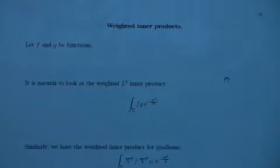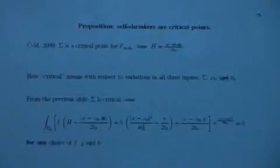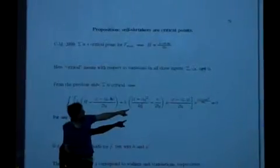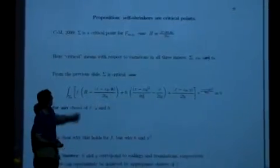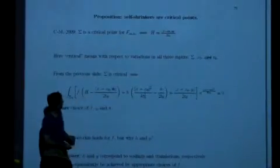Then we'll return to using the second variation to understand the stable critical points. The integrals that show up in this functional all have a Gaussian weight. I can think of each of the three terms as being a weighted inner product in this weighted L² space with the Gaussian weight. We consider an L² inner product with the weighted Gaussian in the integral, and there's a corresponding one you can do with gradients. This is obviously a symmetric bilinear form.